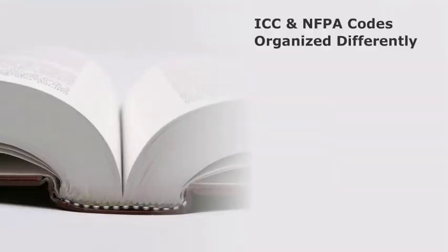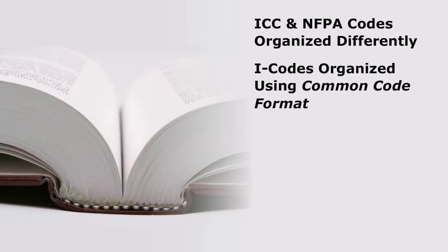The ICC and NFPA codes are organized differently. Most of the I-Codes are organized using the Common Code format. The code is arranged by chapters that address various aspects of a building and include specific requirements for each occupancy or building type.